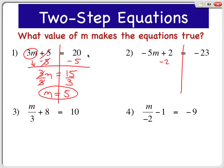We're going to subtract 2. Remember, whatever you do to one side, you have to do the other. 2 minus 2 is 0, and bring down my negative 5m, and that's equal to negative 25.